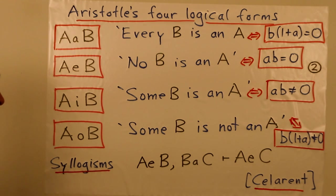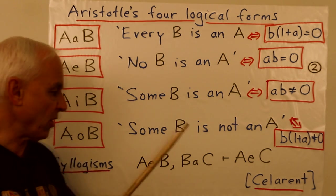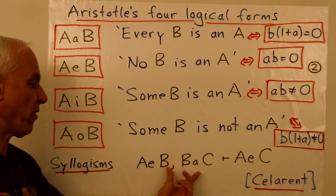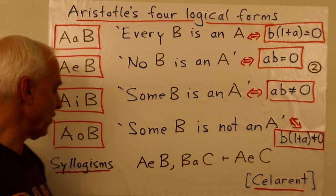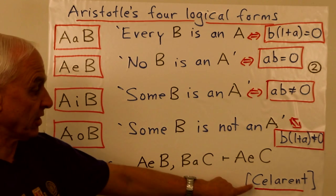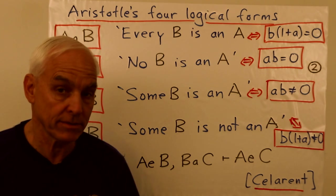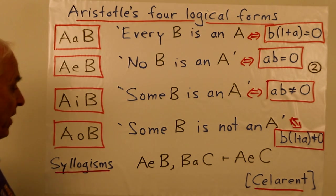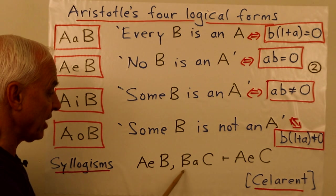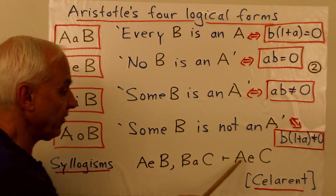And the form of the syllogisms, they have roughly always the same form. There are two premises and then the conclusion. So for example, the syllogism whose name is celerant has the following form: A E B together with B A C implies A E C.